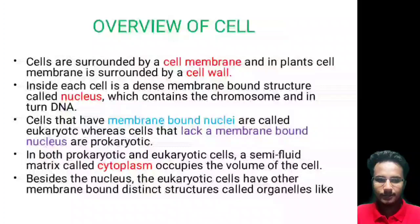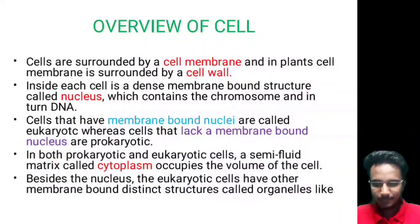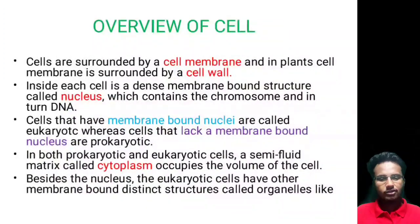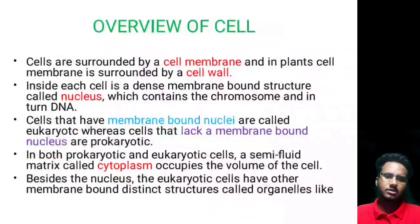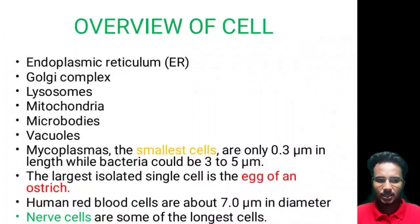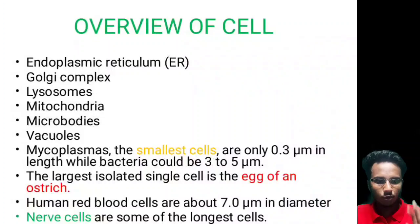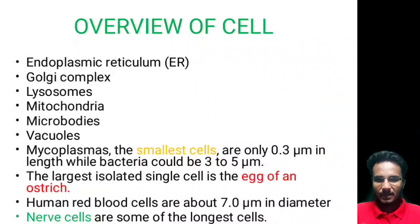Besides the nucleus, in eukaryotic cells there are many distinct structures called organelles — they are the body parts of the cell, just like your hands, nose, and eyes are body parts of your body. Some organelles are: endoplasmic reticulum, Golgi complex, lysosomes, mitochondria, microbodies, and so on. These will be studied in the next class.